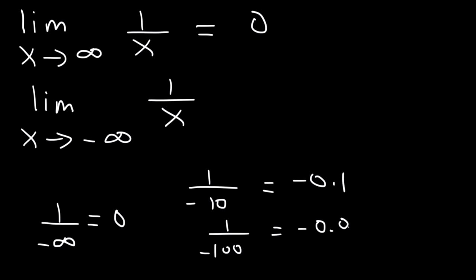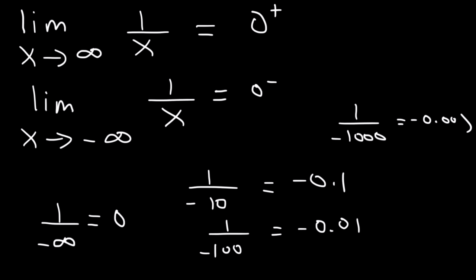And if you divide it by negative 1,000, you get negative 0.001. It's still approaching 0 just from the left side. So this is 0 from the right side, and this is equal to 0 from the left side, which you could just say it's equal to 0.